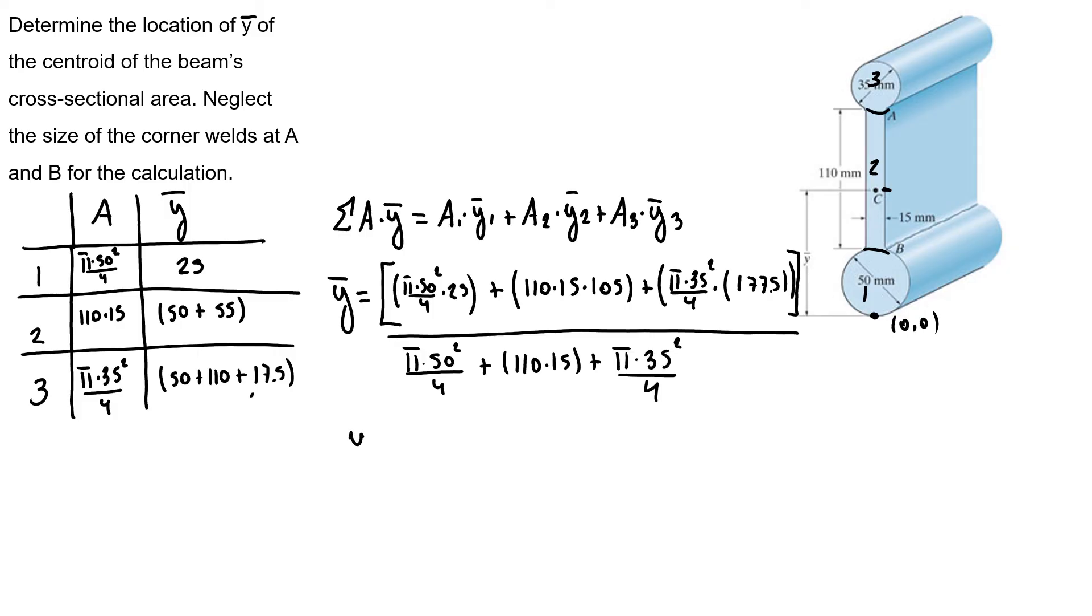It will give us a y-bar value of 85.91 millimeters because we didn't change any units. So for our final answer using three significant figures, it will be 85.9 millimeters starting from this point 0,0 going up.